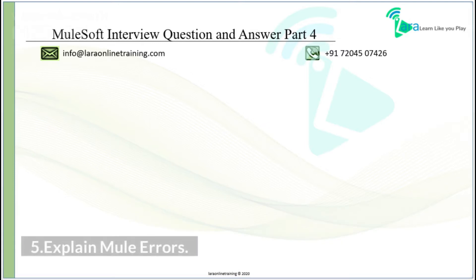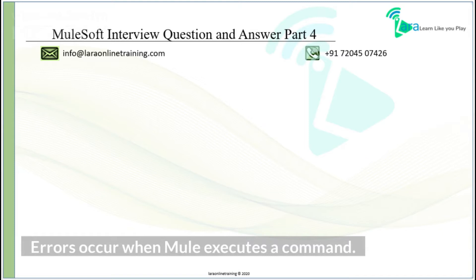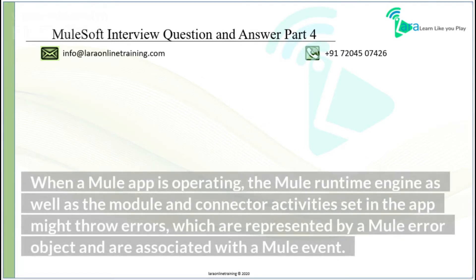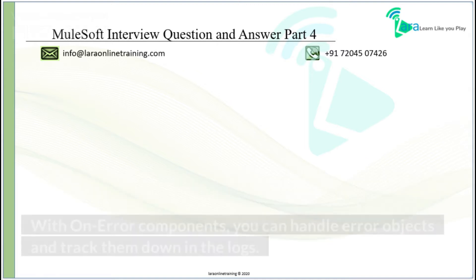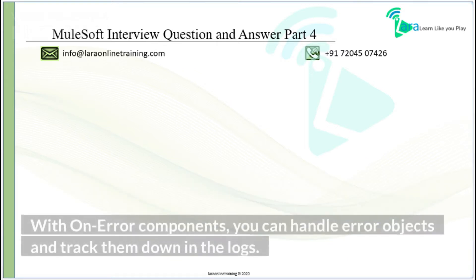Explain Mule Errors. Errors occur when Mule executes a command. When a Mule app is operating, the Mule runtime engine as well as the module and connector activities set in the app might throw errors, which are represented by a Mule error object and are associated with a Mule event. With on-error components, you can handle error objects and track them down in the logs.